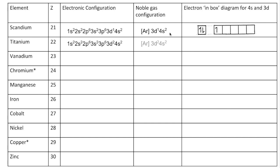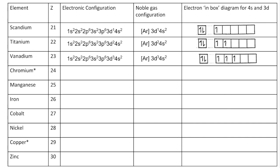Titanium - I'll just run through until we get to chromium. Chromium you would expect the 3D4 configuration, whereas in fact it promotes one of the 4S electrons up to 3D so we get a 3D5 4S1 configuration.